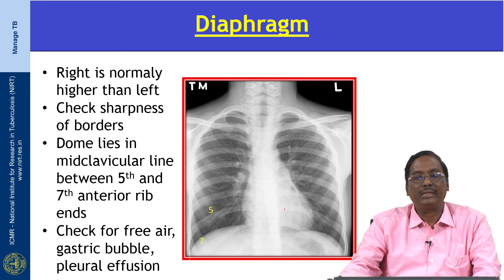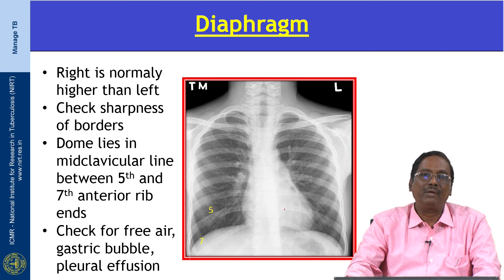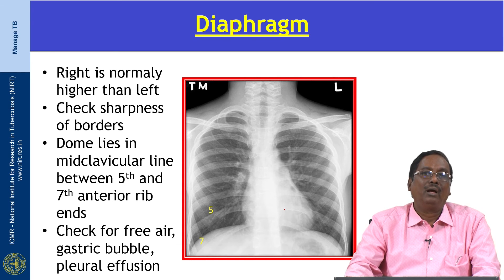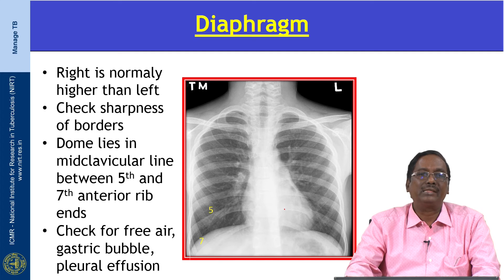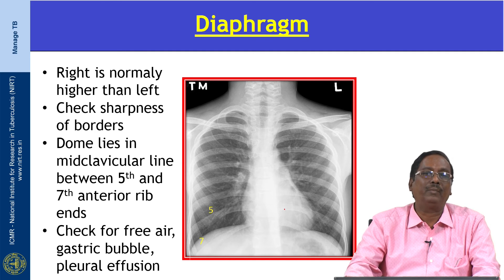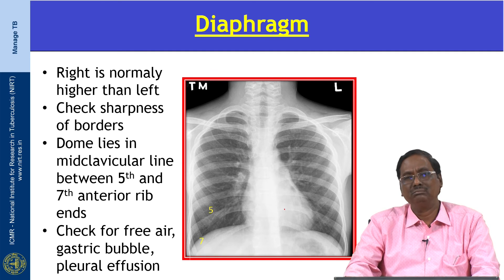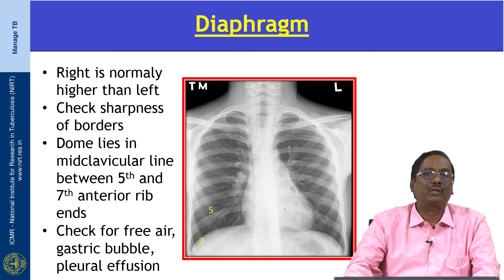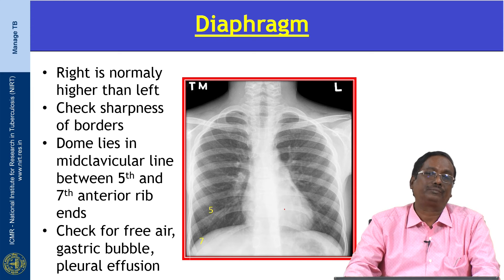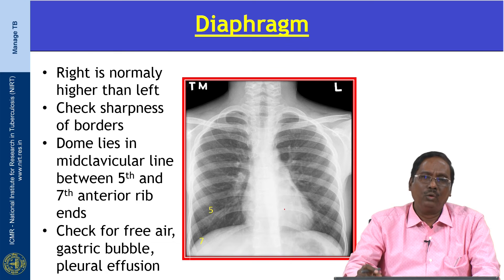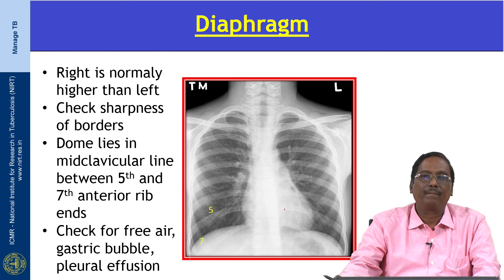Next, check the diaphragm — there are two: right and left. The right diaphragm is slightly higher than the left. We have to check the sharpness of the borders. The dome lies in the mid-clavicular line between the fifth and seventh anterior ribs. We also have to check for free air, gastric bubble, and pleural effusion. The left diaphragm is lower than the right because of the constant thrust of the left ventricle.